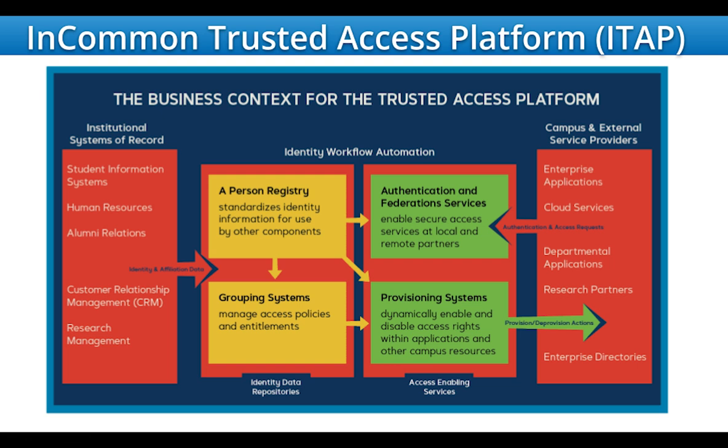The InCommon Trusted Access Platform's goal is to streamline the identity workflow across your IT landscape. Inside this automation, you have your institutional systems of record or source of truth — this can be a student information system, your human resources system, your CRM — places that are housing identity information. The person registry, which is what Midpoint serves as in Navigate, connects with these systems through connectors, whether that is a connector to a Banner system, a SQL database, or a CSV file. Midpoint pulls this in and gives you a standardized location to view and modify identity information.